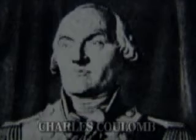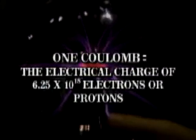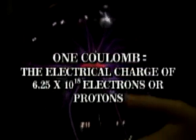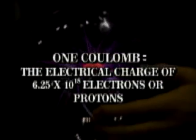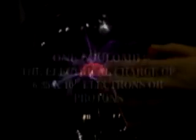One coulomb is defined as the electric charge of 6.25 multiplied by 10 to the 18th electrons or protons. An object that gains 6.25 × 10 to the 18th electrons has a static charge of one coulomb. The object that gave up the electrons also has a charge of one coulomb, because it now has the same amount of excess protons.